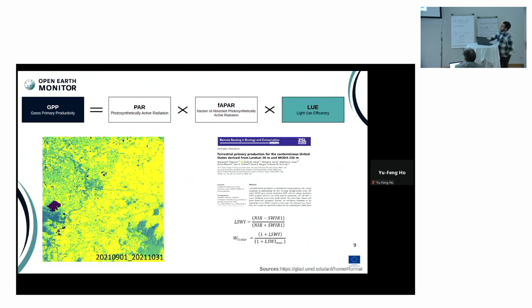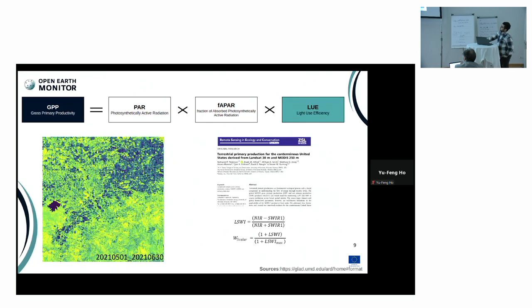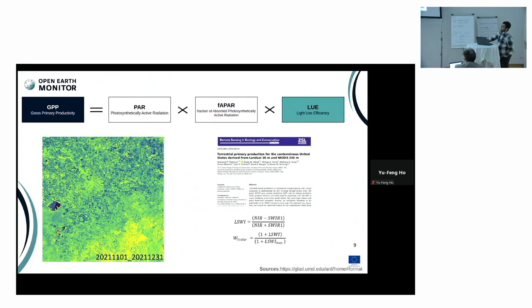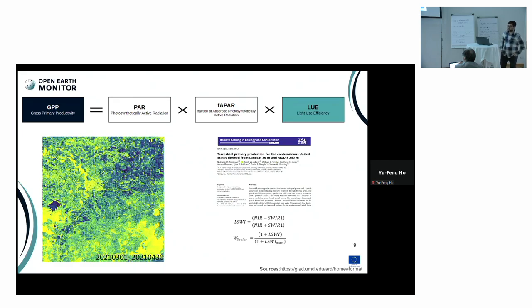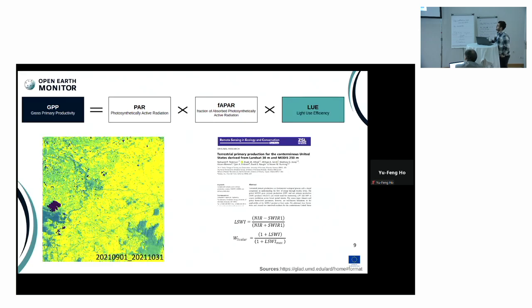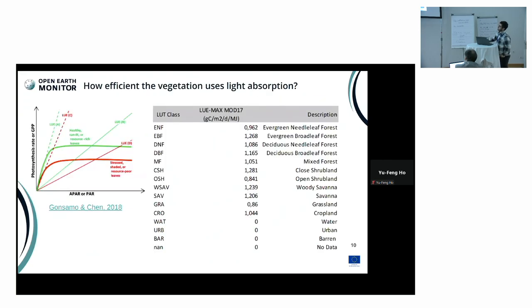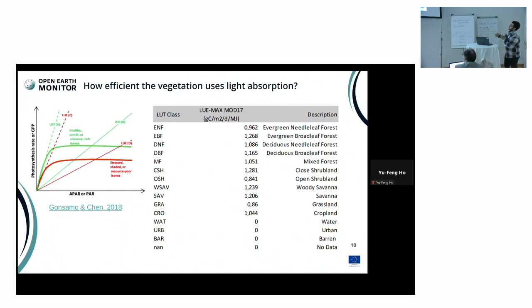This is the final part of the light use efficiency component — the Landsat surface water index from Robinson et al. — where we exploit the near-infrared and short-wavelength infrared bands of Landsat to calculate the water indication at 30 meter resolution. Apart from the T-scaler and W-scaler which come from satellite observations, we need to decide how efficient the vegetation actually uses this information and converts it into carbon.